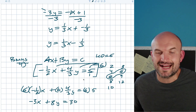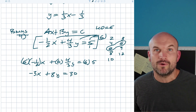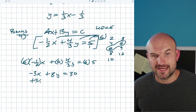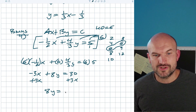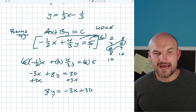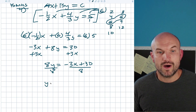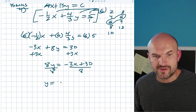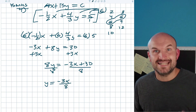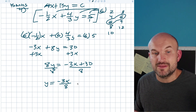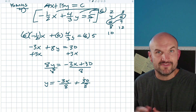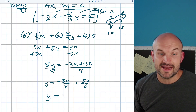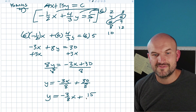Now we basically have the same type of problem. We isolate the y by adding 3x to the other side: 8y equals negative 3x plus 30. Divide by 8 on both sides. 8 does not evenly divide into negative 3x, so we write it as negative 3 eighths x. For the constant, 8 does not divide evenly into 30, but we can divide 2 on the top and bottom: 30 over 8 reduces to 15 over 4. Final answer: y equals negative 3 eighths x plus 15 over 4.